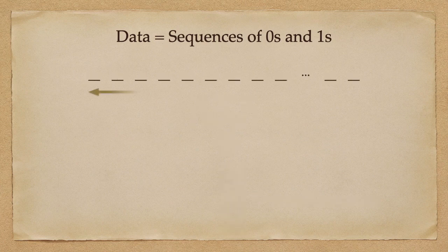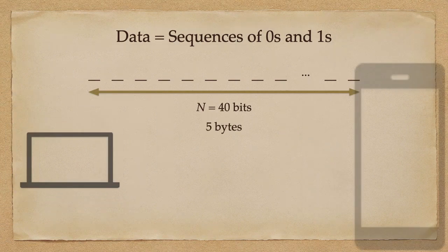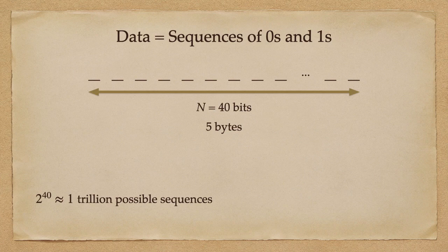Let us now consider a sequence of length 40 bits, which can be stored using 5 bytes of memory. This quantity is actually really small when compared to the storage capacity of our laptops or smartphones. But consider now the number of possible sequences of 5 bytes, which is more or less 1 trillion possible sequences.